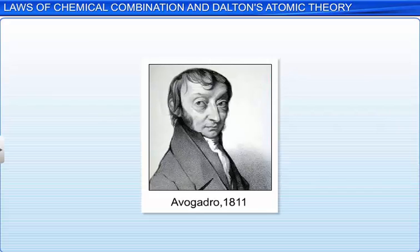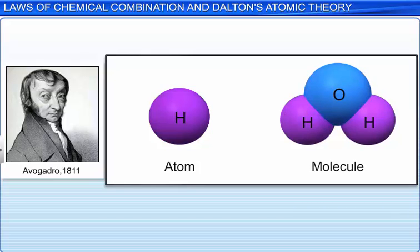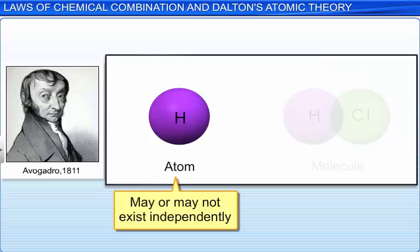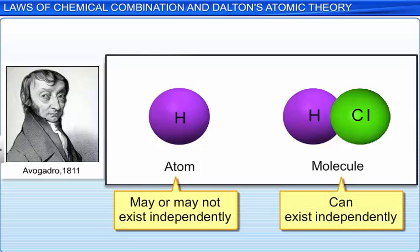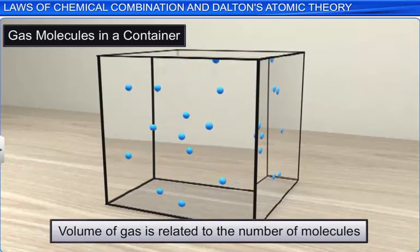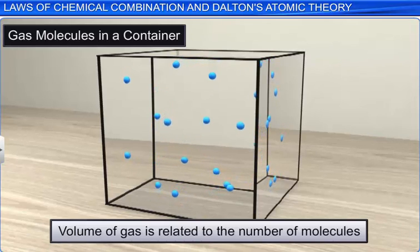In 1811, Avogadro suggested that matter consists of two kinds of particles. He defined an atom as the smallest particle of an element which can take part in a chemical reaction and may or may not be capable of independent existence. He concluded that since the smallest particle of a gas which can exist independently is a molecule and not an atom, the volume of gas must be related to the number of molecules.